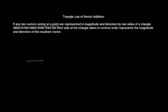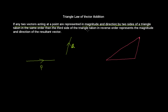Let's say I have vector P and another vector Q. These two vectors are represented in magnitude and direction by two sides of a triangle. This side is representing vector P in magnitude and direction, and this side is representing vector Q in magnitude and direction. So P and Q are representing two sides of the triangle.